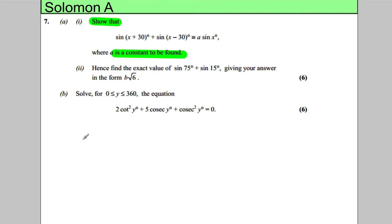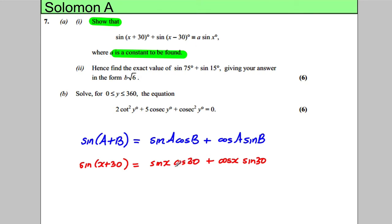In your formula book, you will find that sine of a plus b for some angles a and b equals sine a cosine b plus cosine a sine b. We're applying this where our a is x and our b is 30. So this would be sine x cosine 30 plus cosine x sine 30. Cosine 30 is root 3 over 2, and sine 30 is a half. So we could write this as root 3 over 2 sine x plus a half cosine x. This is our sine of x add 30.